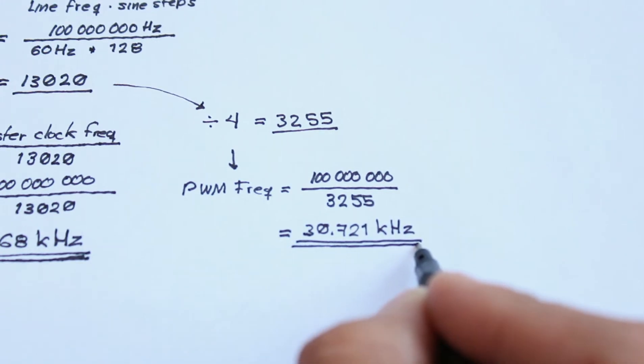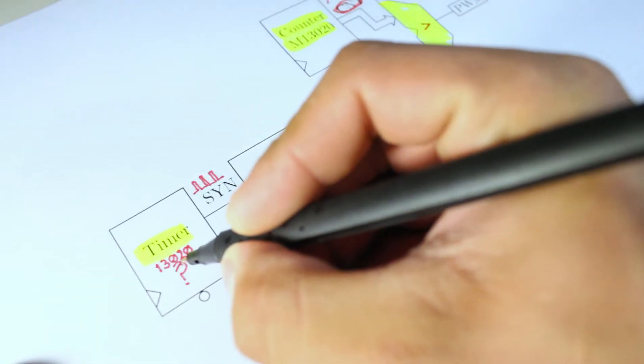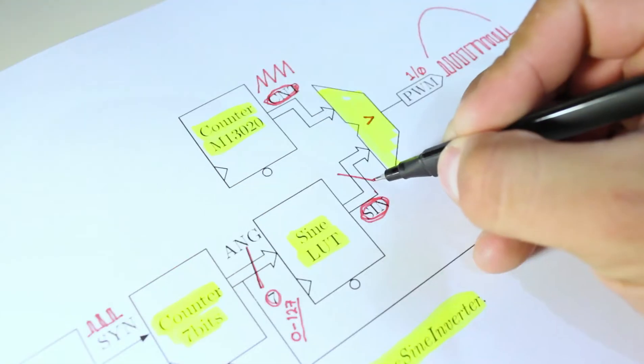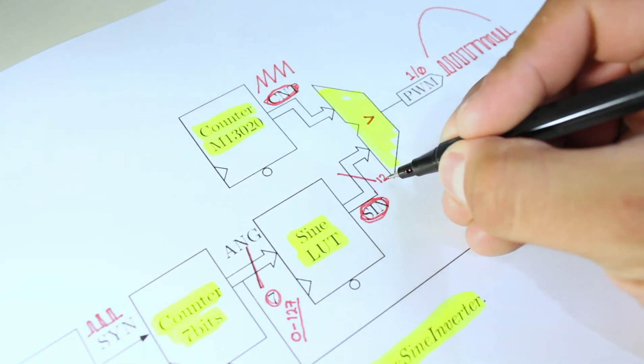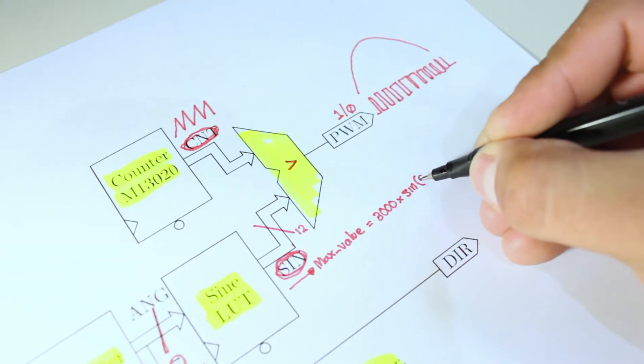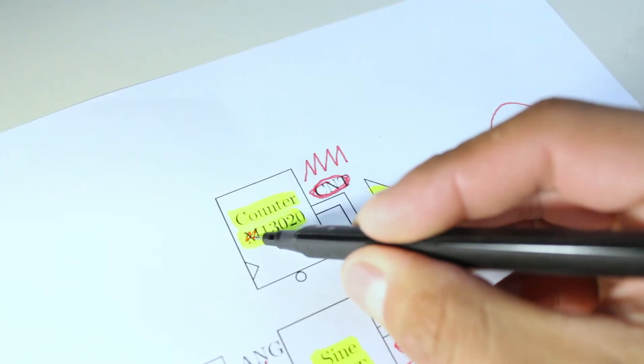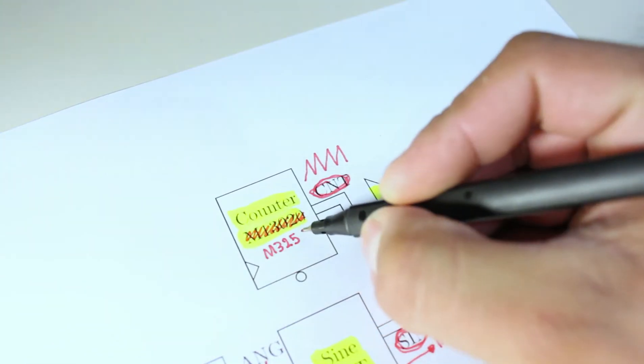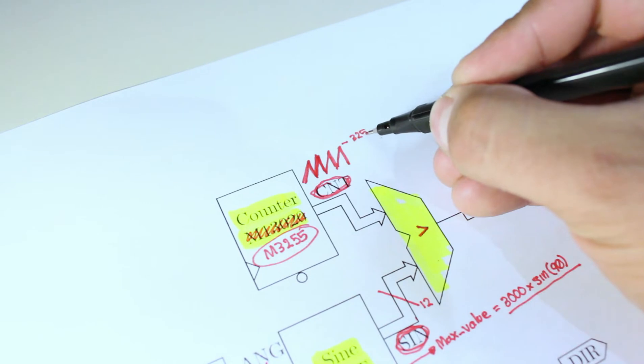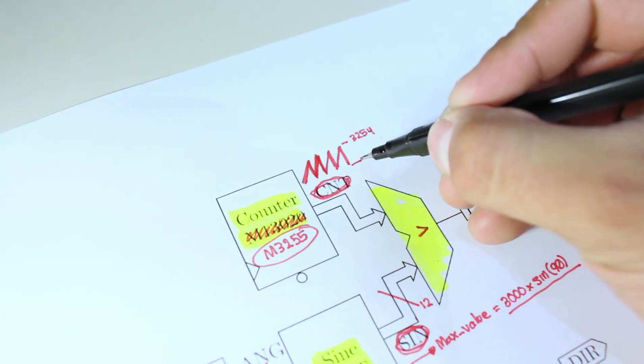Thus, the timer period is 13,020. The sine lookup table is 12 bits width, which maximum value at 90 degrees is 3000. The special purpose counter must count up to 3,255 and then return to 0 to start over again.